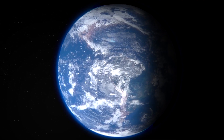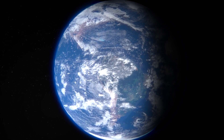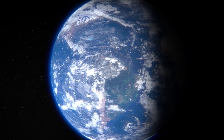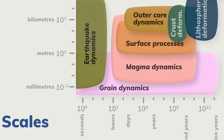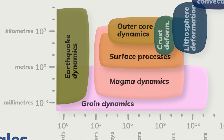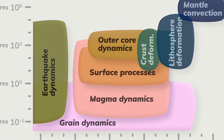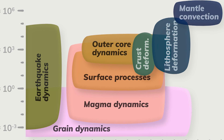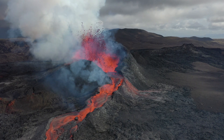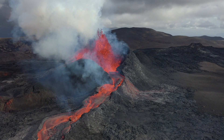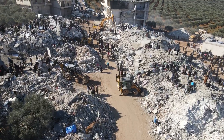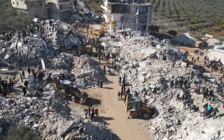Geodynamic modeling uses computer models to study the motions of the Earth and other planets, and links to many other geoscience disciplines to create a holistic picture of the large-scale happenings inside the Earth, which can also have, of course, a direct effect on humans through natural hazards such as earthquakes.